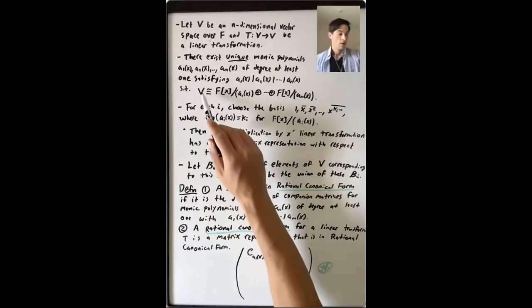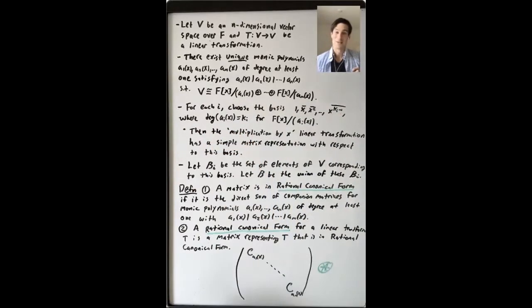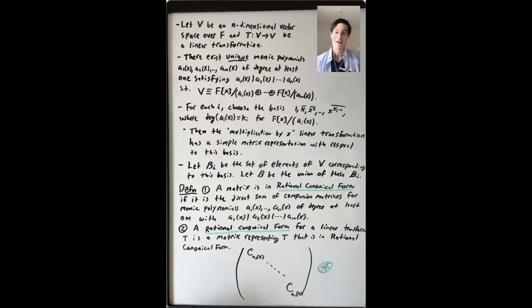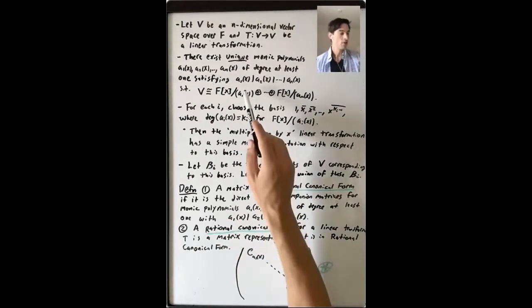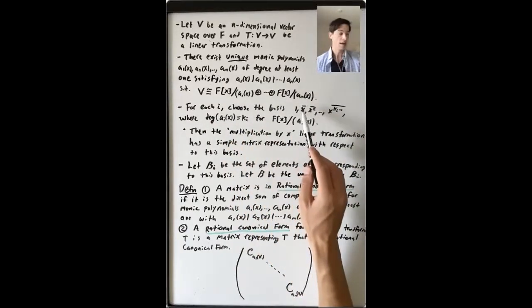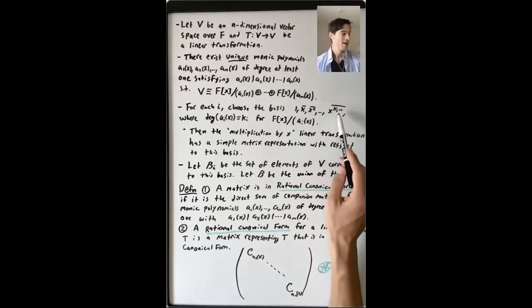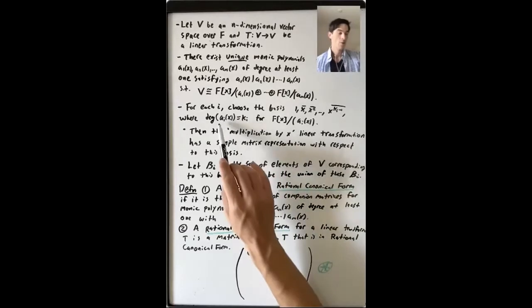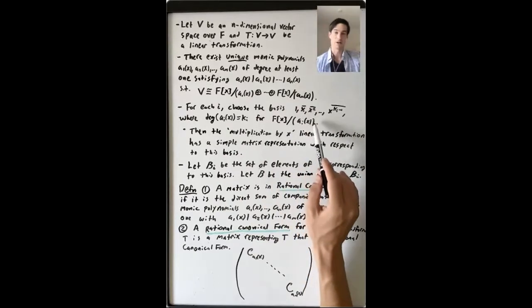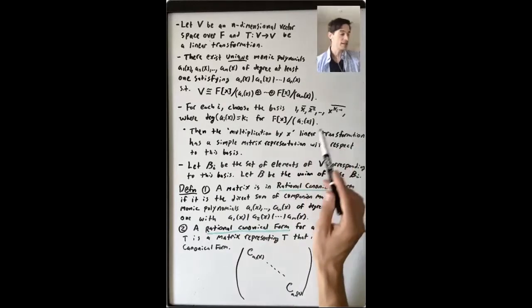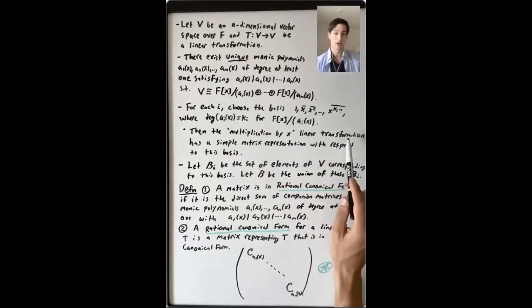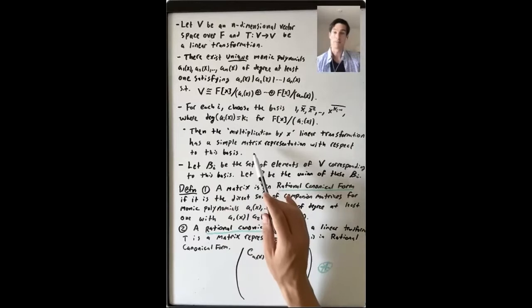We want to choose a good basis for V where we can describe the linear transformation T in a nice way with respect to that basis. We're going to work one cyclic F[X] module at a time. For each I, we're going to choose the basis: one, X-bar, X-squared-bar, up to X to the KI minus one, where the degree of AI is KI. This gives a basis for the quotient F[X] mod the ideal generated by AI. If we pick that basis, then the multiplication-by-X linear transformation has a simple matrix representation with respect to this basis.